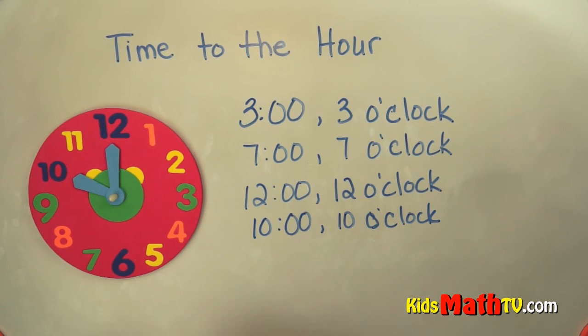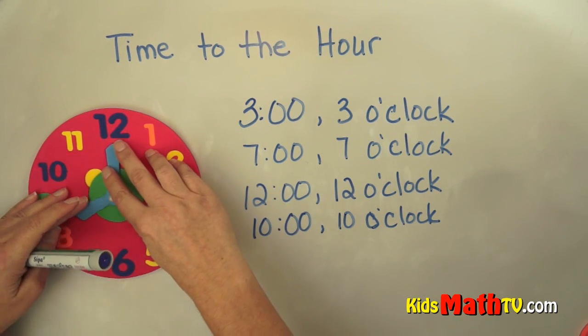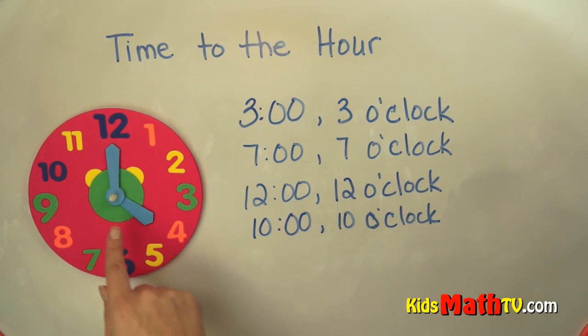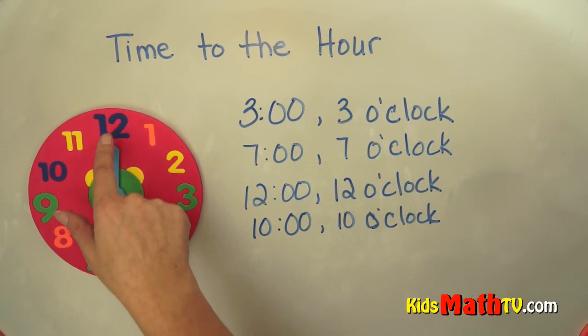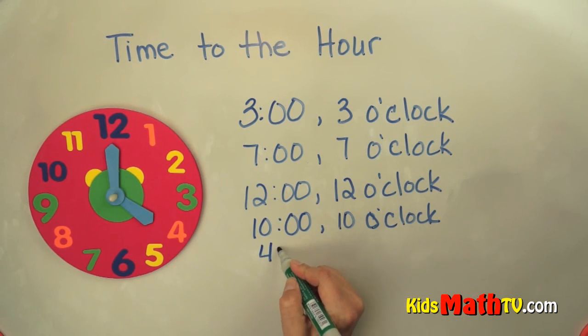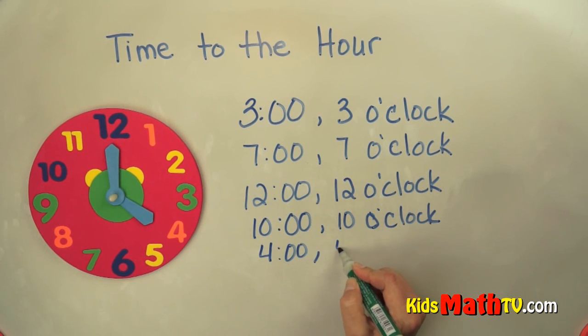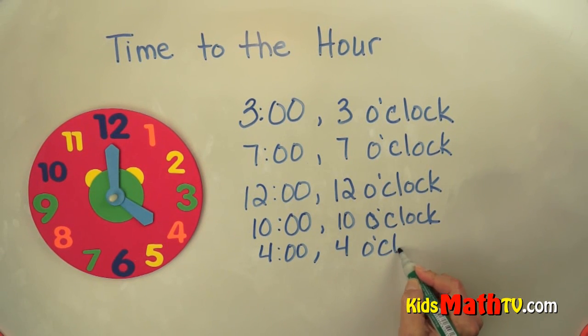Let's try another one. What if it was down over here? The little hand is on the 4 and the big hand is straight up at the 12. So this says 4 o'clock. 4:00, 4 o'clock.